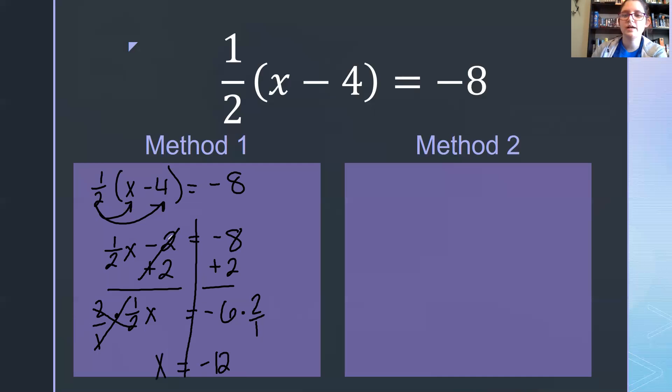Okay, let's try this again by undoing our distributive property first. So we're going to undo the fraction the same way we did in the first method by multiplying by its reciprocal. So times 2 over 1 times 2 over 1. This side cancels.